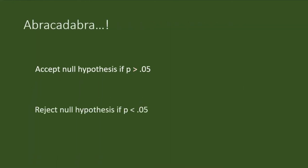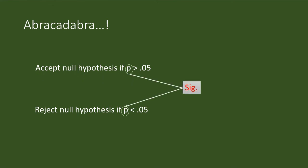These are our magic spells: accept the null hypothesis if p is greater than 0.05, and reject the null hypothesis if p is lesser than 0.05. Please be cautious — some popular softwares present p as 'Sig.' with a period. This 'Sig.' stands for significance and indicates nothing but probability, or p.